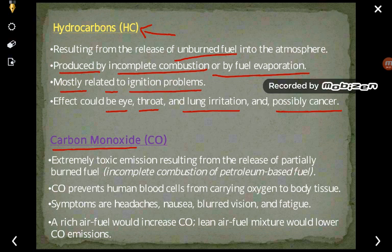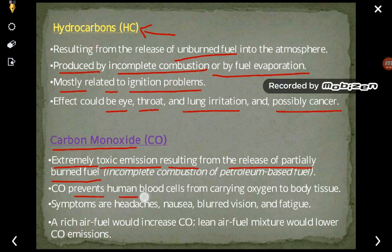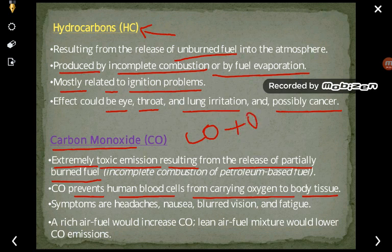Next is carbon monoxide. It is an extremely toxic emission — considered one of the most toxic of all emissions. It results from the release of partially burnt fuel; incomplete combustion of petroleum or fuel liberates this dangerous, toxic carbon monoxide. Carbon monoxide prevents human blood cells from carrying oxygen to the body tissue, because it binds with blood more frequently than oxygen does.